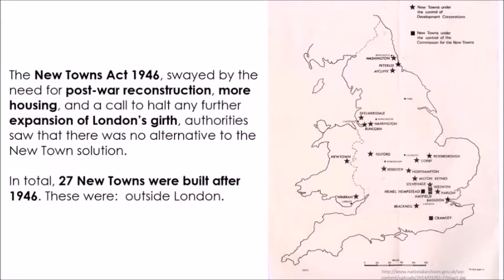The New Towns Act of 1946 was swayed by the need for post-war reconstruction. There was a need for more housing and a call to halt any further expansion of London's growth. Authorities saw that there was no alternative but a new town solution, and therefore 27 new towns were built after 1946.